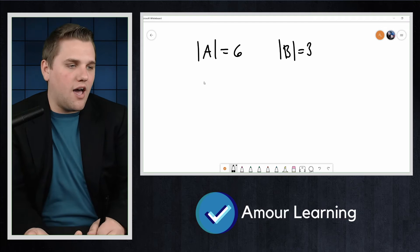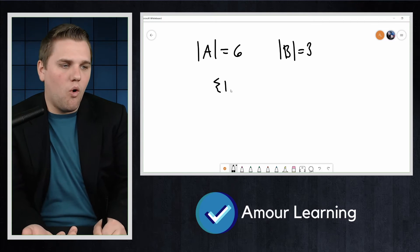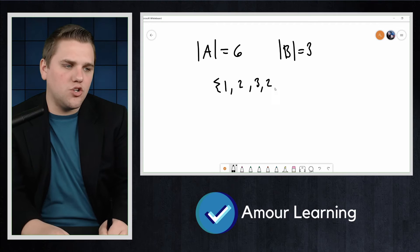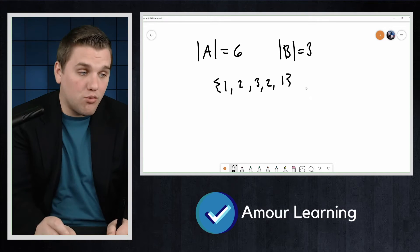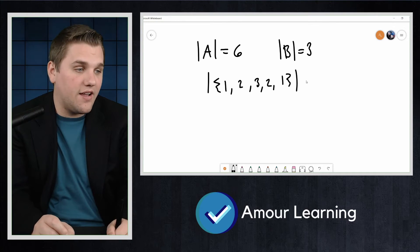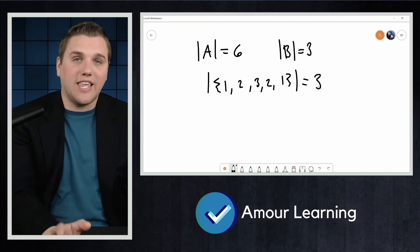Note that the cardinality of, for example, {1, 2, 3, 2, 1} is 3. The size of this set is 3. We do not count repeats.